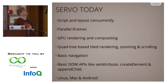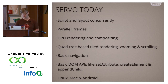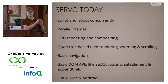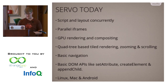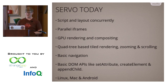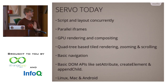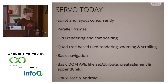Today we have script and layout running concurrently. We have parallel iframes, which we just did. We render on the GPU and composite on the GPU. We are the only browser with quadtree tile rendering — whenever we render graphics to the screen, we divide the whole thing up into tiles and manage them in a quadtree. This makes it really easy to find tiles to evict from memory when scrolling to make room for new tiles. We have basic navigation, basic DOM APIs — setAttribute, createElement, appendChild — and it works on Linux, Mac, and sometimes on Android. We haven't got Android in our continuous integration system so it gets broken a lot, but that should be fixed fairly soon.